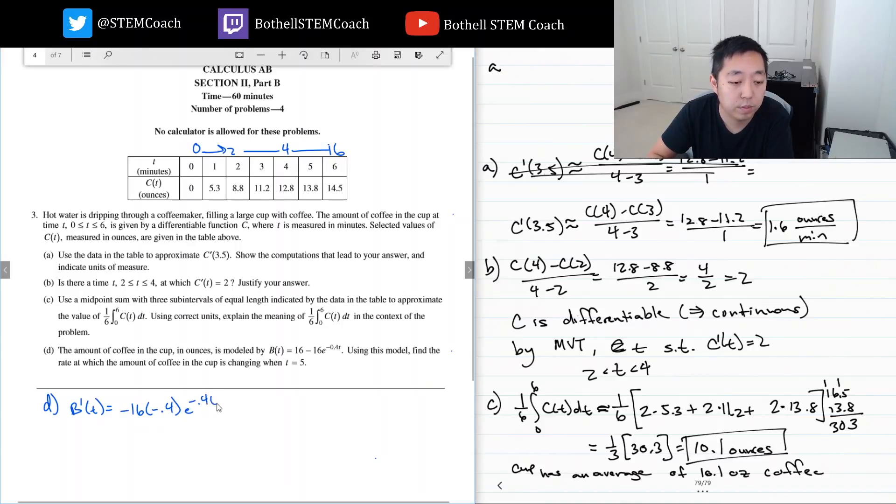The derivative of e to the minus 0.4t is e to the minus 0.4t times the derivative of the inside by chain rule, which is minus 0.4. That's equal to 6.4, the negatives cancel, e to the minus 0.4t. When t equals 5, b prime at 5 equals 6.4 e to the minus 2, which is 6.4 over e squared. You can leave it as that, probably.